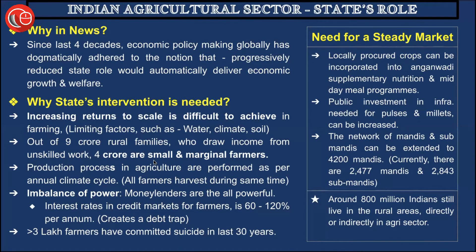If the state is removed from the agricultural sector and there is complete monopoly of the corporate or private sector, these small, marginal, or landless laborers might be exploited. Thirdly, it is pointed out that the production process in agriculture must be performed as per the annual climate cycle and it does not get organized as an assembly line. Therefore, all farmers harvest at the same time.